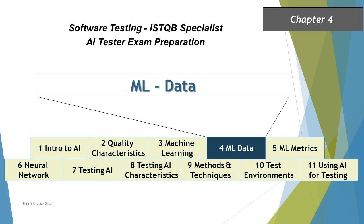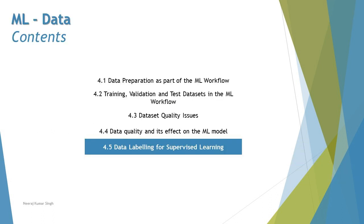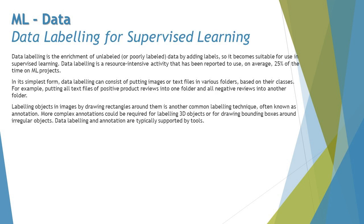Hello friends, welcome back to another tutorial on our ISTQB AI Tester certification. We are in chapter 4 talking about data for ML, and continuing with our last segment today: 4.5 data labeling for supervised learning. Supervised learning makes use of labeled data, which classifies information in a way that the system can understand and adopt.